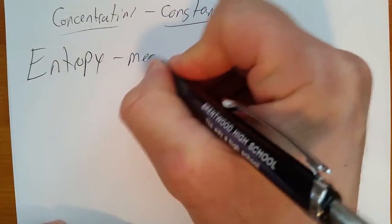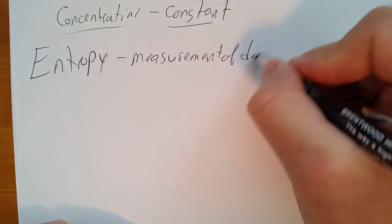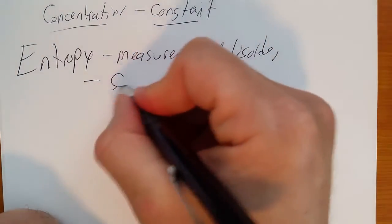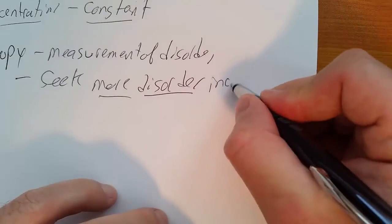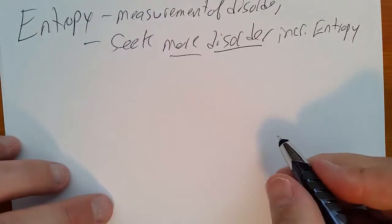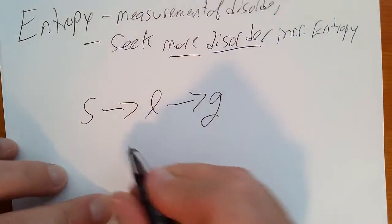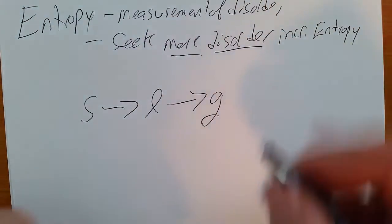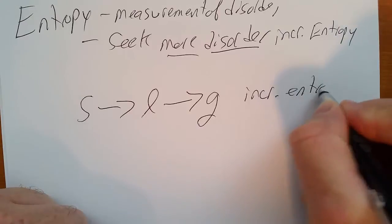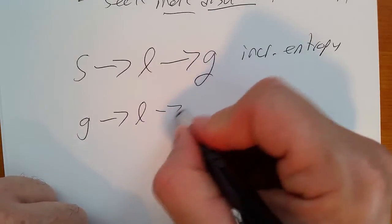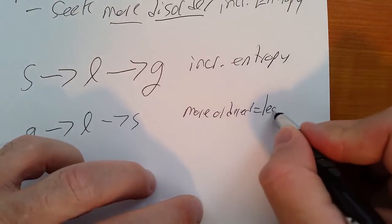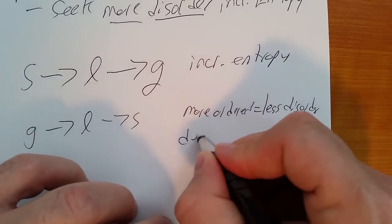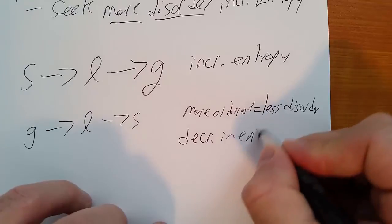The last topic in this unit is entropy, which is a measurement of disorder. Things in nature tend to seek more disorder. More disorder is an increase in entropy. When we go from solid to liquid to gas, molecules get further apart and it becomes more disordered — that is an increase in entropy. Going the other way, from gas to liquid to solid, it becomes more ordered, which is a decrease in entropy.